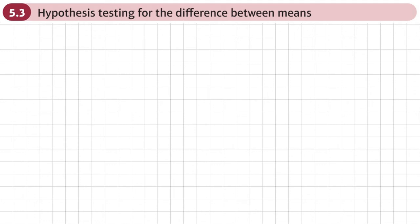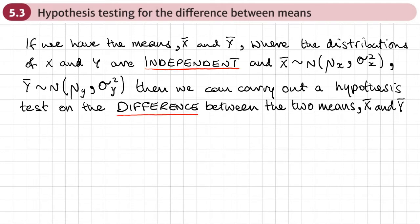This is the third section, Chapter 5, where we're going to be looking at hypothesis testing for the difference between means. If we have the means X-bar and Y-bar, where the distributions of X and Y are independent, and the distribution of the sample mean of X is normally distributed with its own mean and variance, and the sample mean's distribution for Y is also normally distributed with its own mean and variance, then we can carry out a hypothesis test.